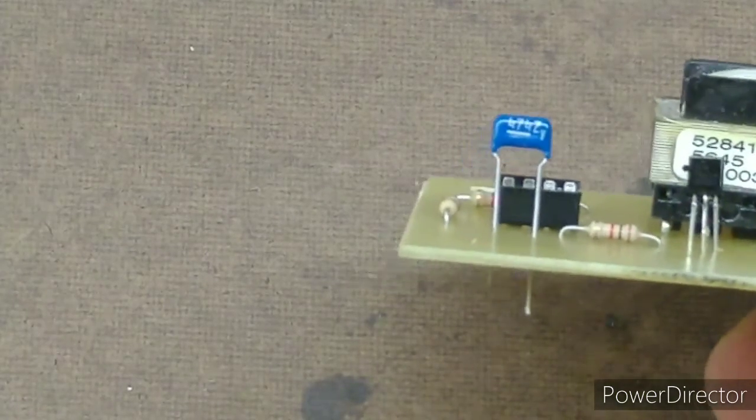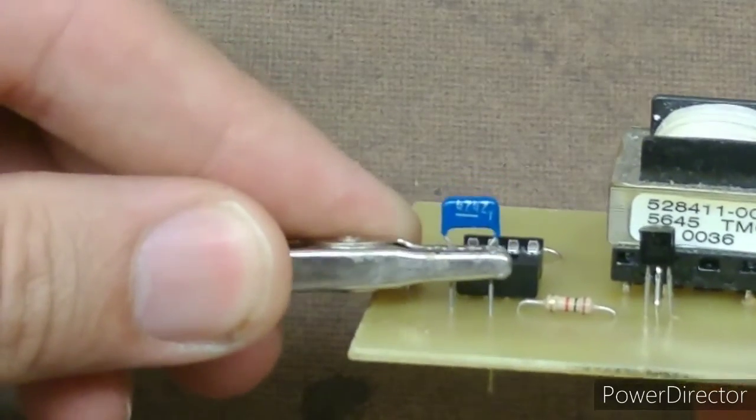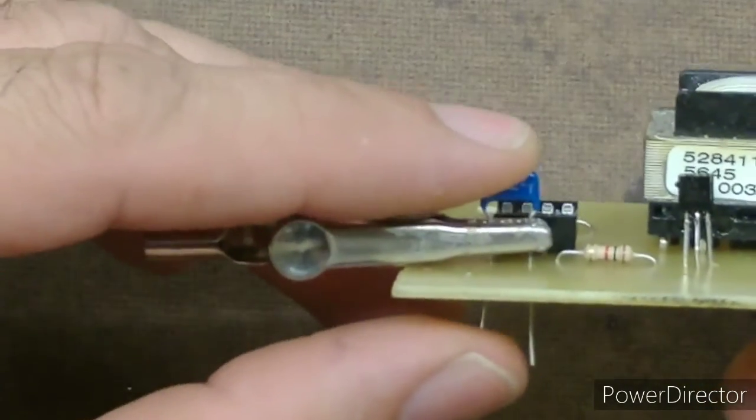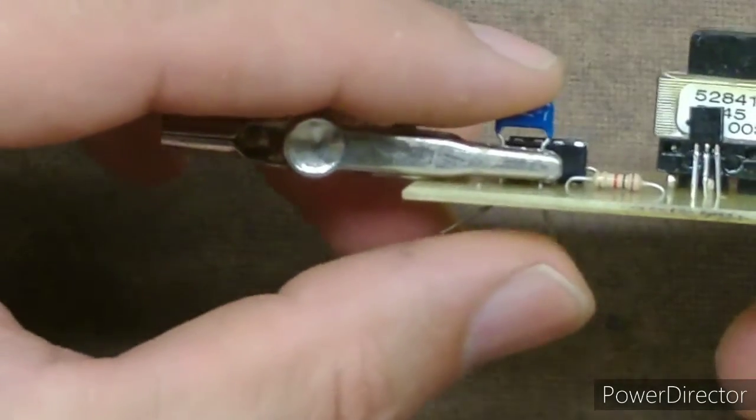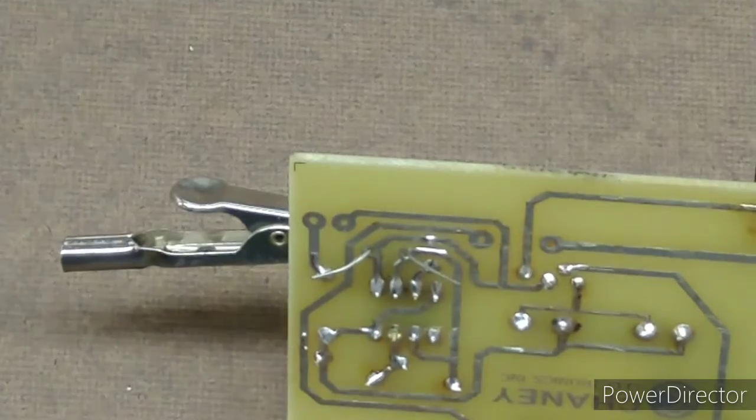So just like we did before, we're going to use our heat sink, these clamps. This time what I can do is go across both leads at the same time. I like to bend the wires out here like that, and then I can go ahead and solder this in place.